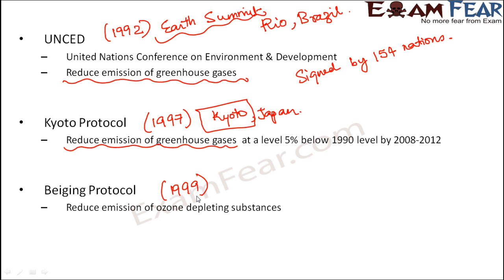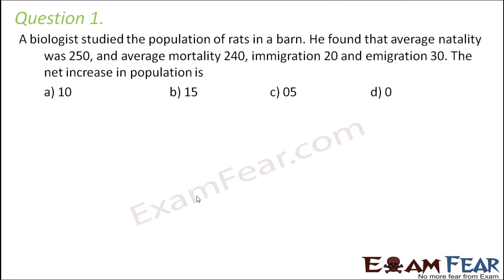We spoke about quite a few initiatives taken by various organizations — some to protect the ozone layer, some to protect the earth from global warming. Different initiatives were taken and many nations supported them. We still really need to take enough care of the environment if we want to have a happier and healthier future.